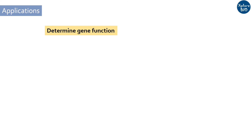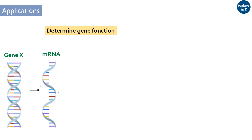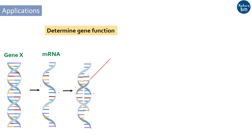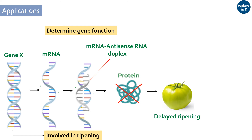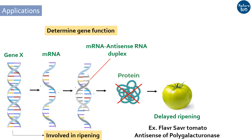Coming on to the applications of antisense RNA technology, there are basically two major applications. It is a useful approach in research to understand the role of a particular gene by down-regulating it. For example, to check if gene X is responsible for fruit ripening, its antisense RNA is administered to the plant. The antisense RNA will form a duplex with the mRNA of gene X. If this results in delayed fruit ripening, then it shows gene X is involved in the ripening process. A well-known example of this is the Flavr Savr Tomato, in which the polygalacturonase gene was down-regulated using antisense RNA.